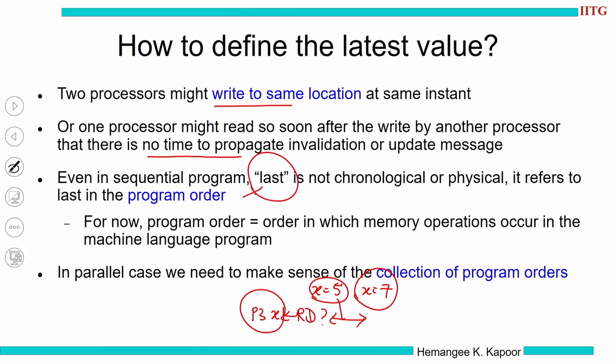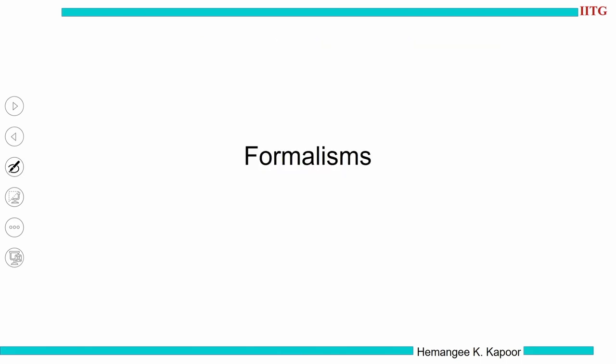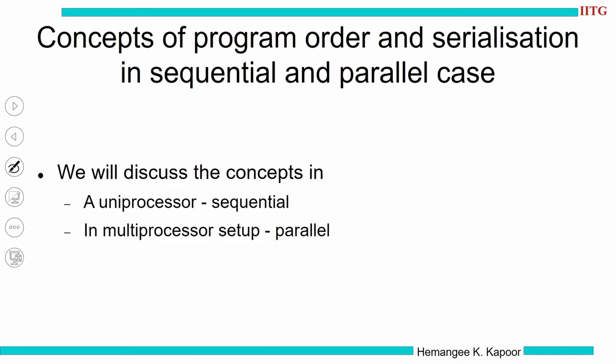When we say last value, it is actually in the program order. Program order is the order or sequence of instructions which execute in the program, essentially related to only loads and stores. In a sequential program it is a single order — a sequence of instructions in a single program running on a single processor. But in a parallel program, we have multiple threads and each thread has its own program order. So how do we understand the concept of a latest value when there are multiple program orders running in a parallel system?